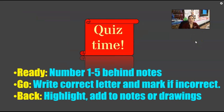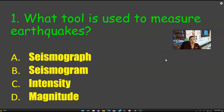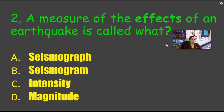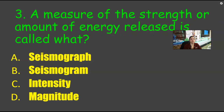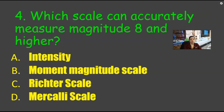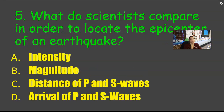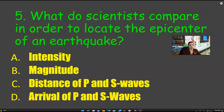Quiz time — quiz four, locating. Five questions. Number one: what tool is used to measure an earthquake — seismograph, seismogram, intensity, or magnitude? Number two: a measure of the effect of an earthquake is called what — seismograph, seismogram, intensity, or magnitude? Number three: the measure of strength or amount of energy released is called — seismograph, seismogram, intensity, or magnitude? Number four: which scale can accurately measure magnitude 8 and higher — moment magnitude scale, Richter scale, or Mercalli scale? Number five: what do scientists compare to locate an epicenter — intensity, magnitude, distance of P and S wave, or arrival of P and S wave?